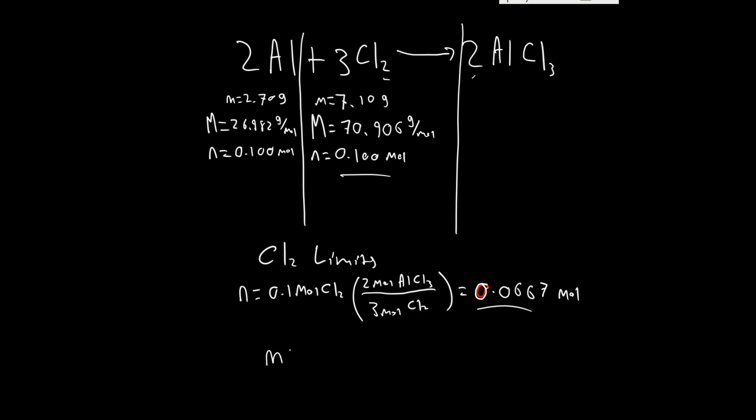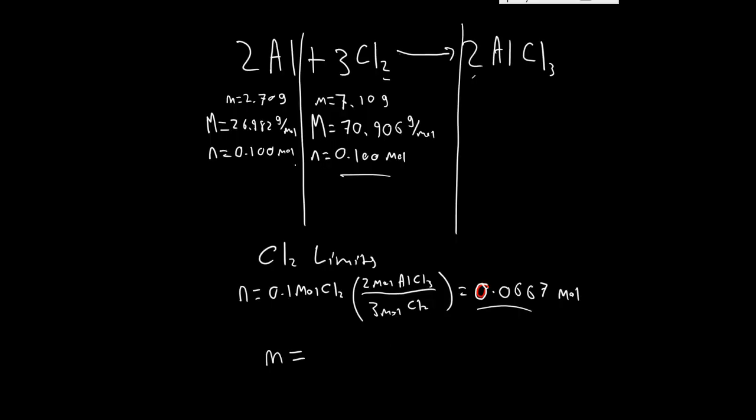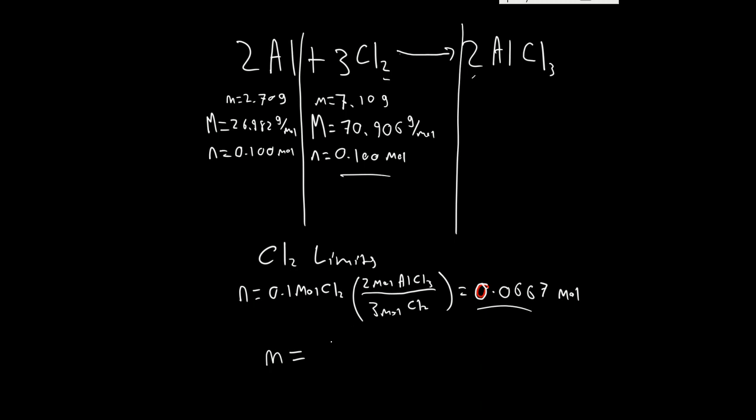Now mass equals that times the molar mass. Well, what's the molar mass? Molar mass is AlCl3, there's Al, 26.982 grams per mole, plus 3 times whatever the chlorine is, 35.453 grams per mole, and we're going to get about 133.341 grams per mole of the product. So multiply that by 0.06666 repeating, and you'll get 8.89 grams. So assuming full reaction, that is the mass of the product that you will receive. Happy days.